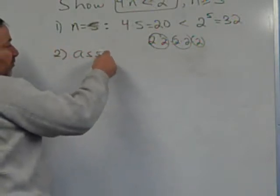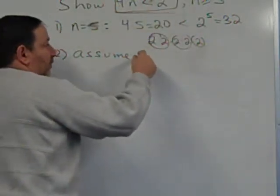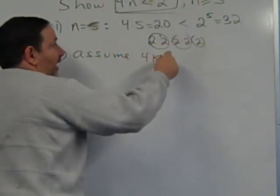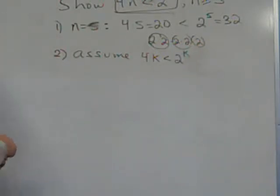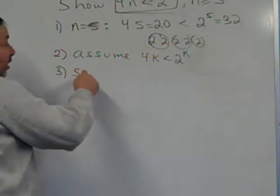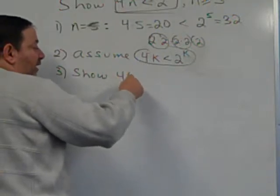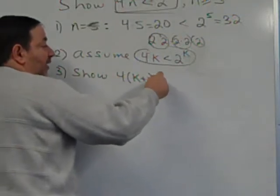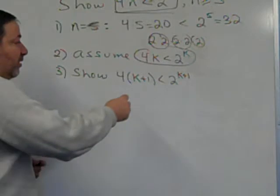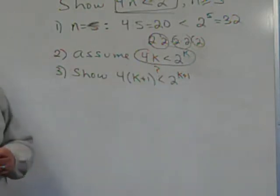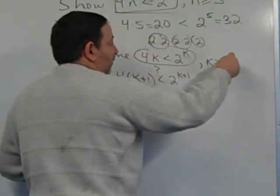Step 2 is you assume that this statement is true where n equals k: assume that 4k is less than 2 to the k. Step 3 is to show that when k becomes k plus 1, 4 times (k plus 1) is less than 2 to the (k plus 1). We want to show that — this is all for k greater than or equal to 5.